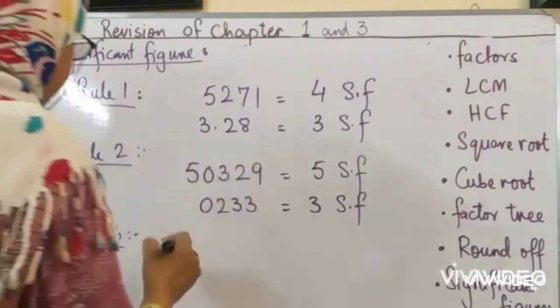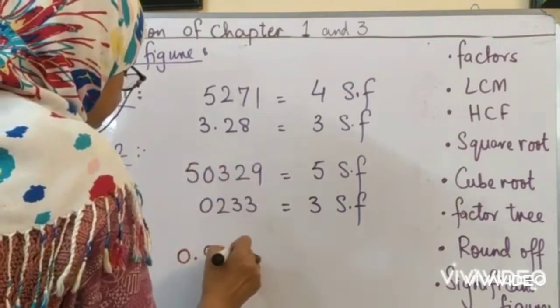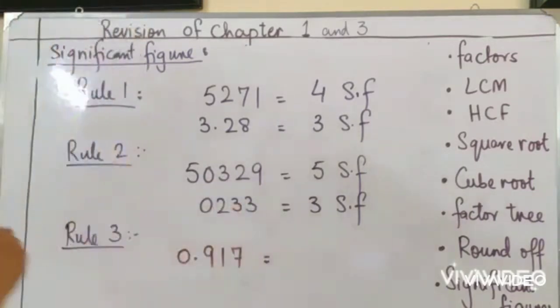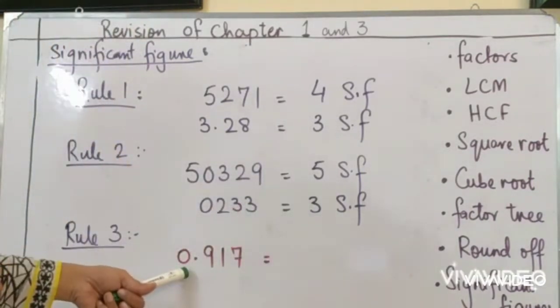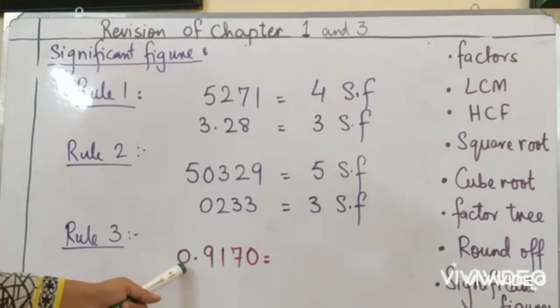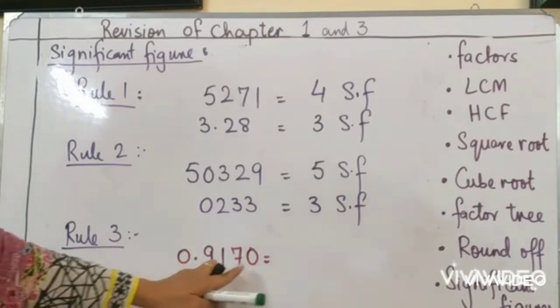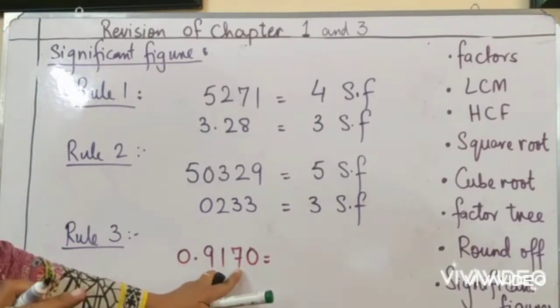If we have a number 0.917. All zeros after a non-zero. I don't have a zero. I will put a zero here. Now, what about before zero? No instruction. So we will ignore it.